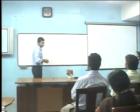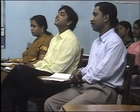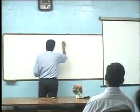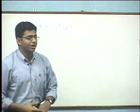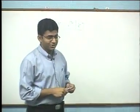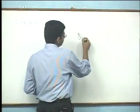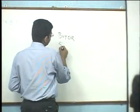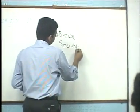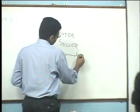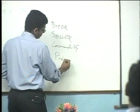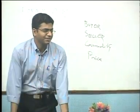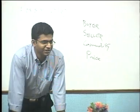What is a market? Where you can buy and sell things. So usually there will be a buyer, a seller, a commodity, and a price.